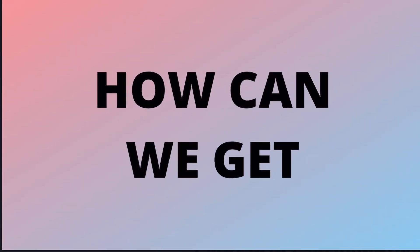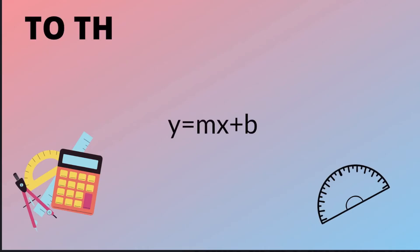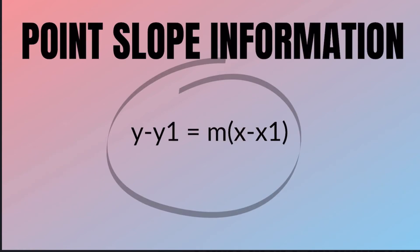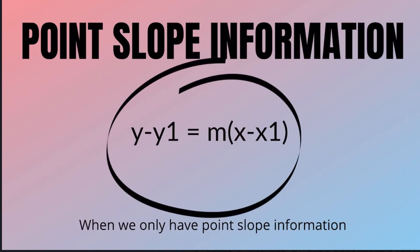But how can we get to the slope intercept equation when we only have point slope information?